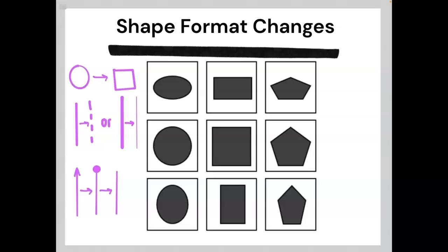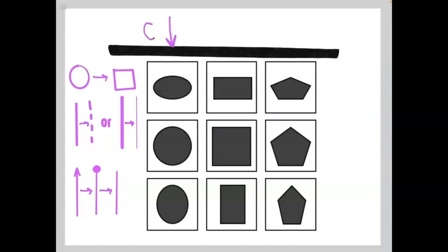In this example, all of the elements in each column are the same shape. In the first column, we have circles. In the middle column, we have squares. And in the third column, we have pentagons. Each row is changing the format of each of these shapes. The middle row is the original shape, unaltered. The top row is compressing the shapes, making them shorter and a bit wider. While the bottom row is stretching the shapes, making them taller and a bit thinner.